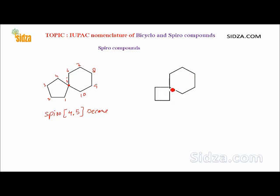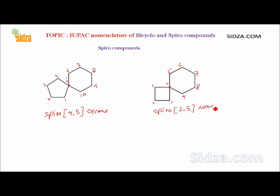Here is another molecule. The spirocarbon is identified and numbering from the smaller cyclic ring gives: one, two, three, four, five, six, seven, eight, nine. There are three carbons in the smaller ring and five in the larger ring — so spiro[3.5]. Nine carbon atoms total, so it is nonane: spiro[3.5]nonane. Hope you got the concept — thanks for watching, bye for now.